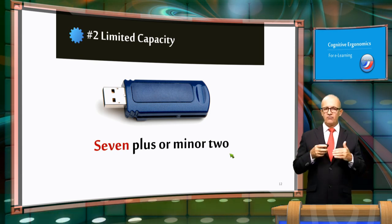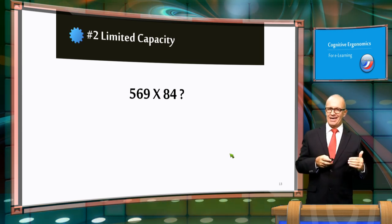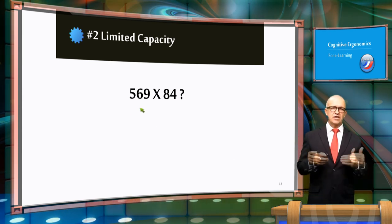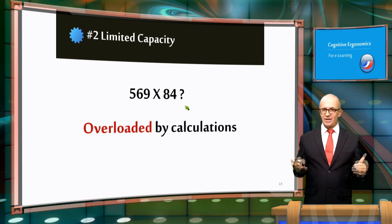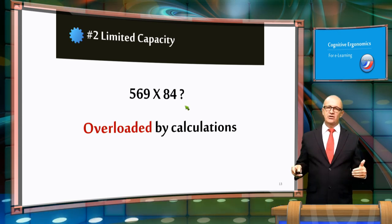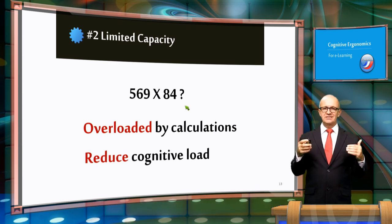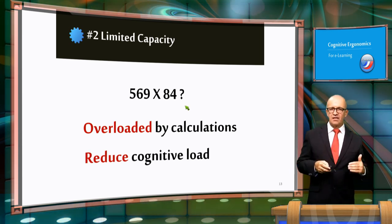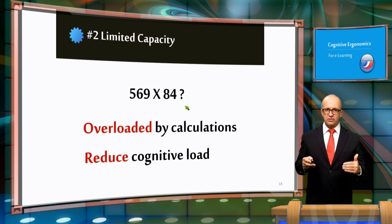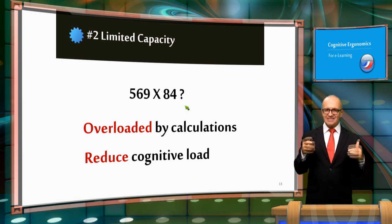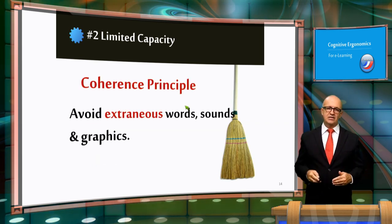For example, if you try to multiply 569 by 84 in your head, you won't be able to carry out another mental task at the same time because your working memory is overloaded by calculations. As a result, inappropriate contents or methods that overload the working memory make learning much more difficult. Consequently, it is necessary to reduce the cognitive load in order to facilitate learning.